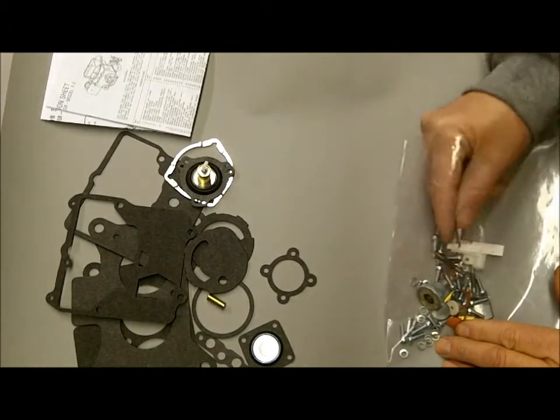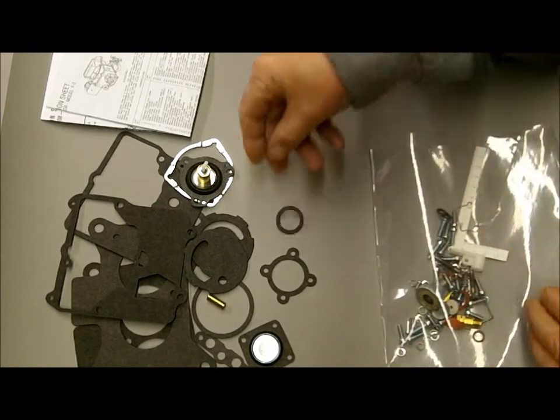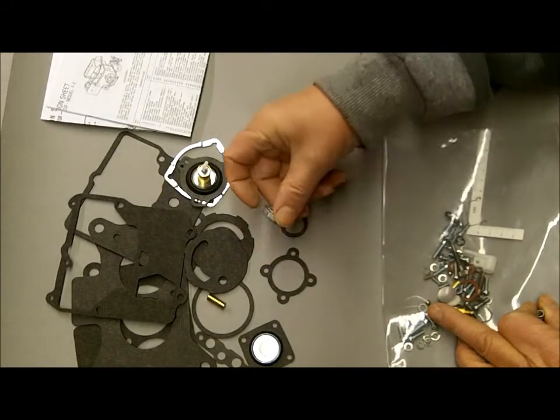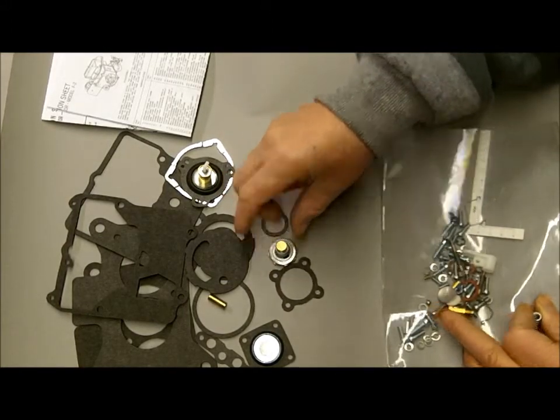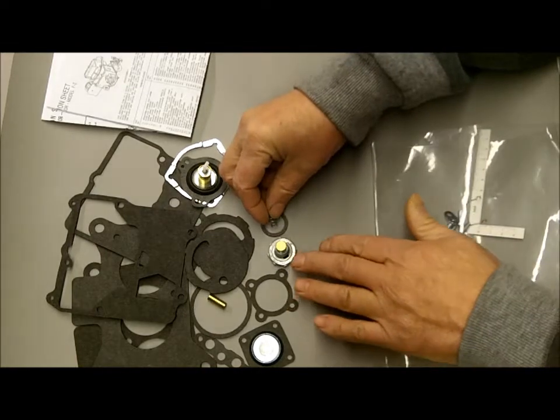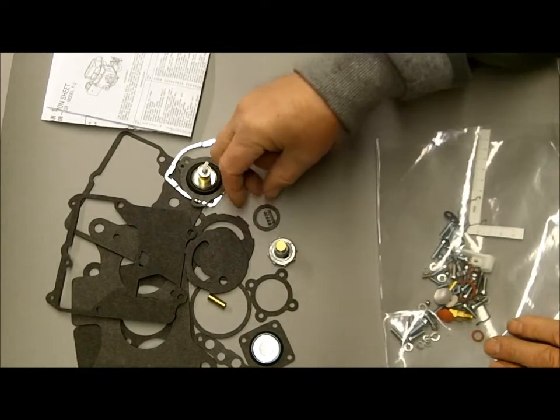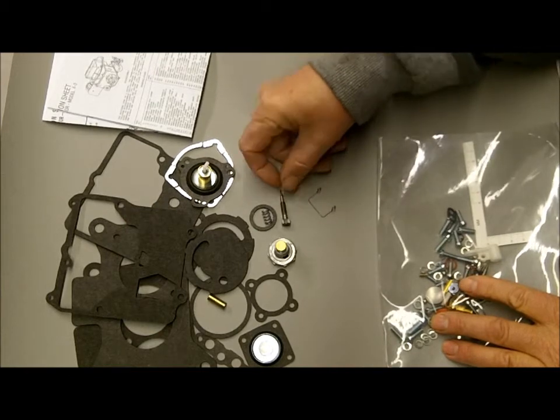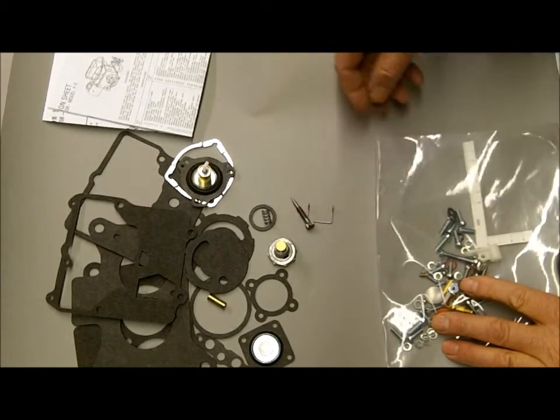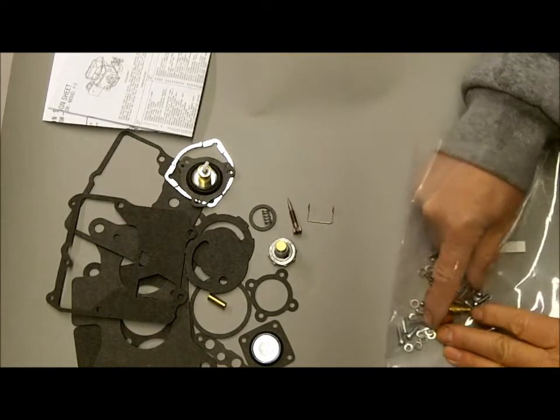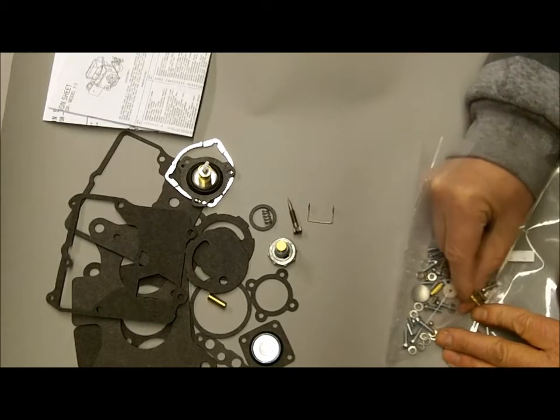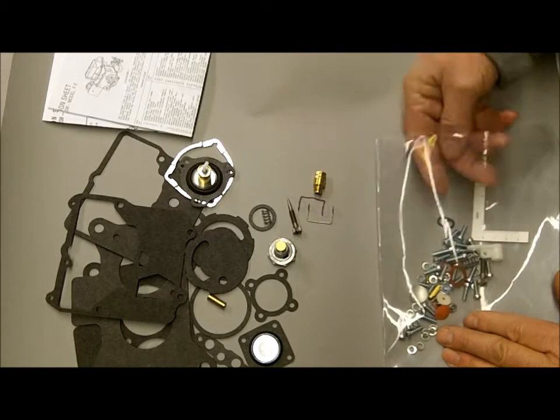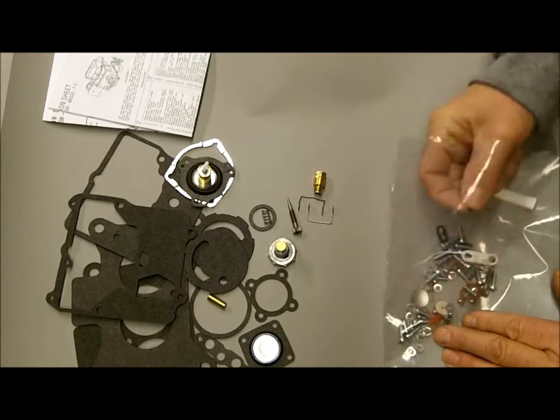Here's the gasket for your power valve, your power valve washer, comes with the standard size power valve, probably an 8.5 is my guess, standard for the standard vacuum. Spring and idle mixer screw and spring, and a little clip for your float. Got a couple different types. And then of course we'll have a needle and seat with a viton tip.